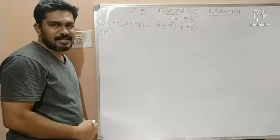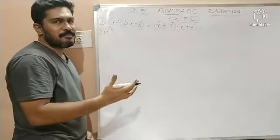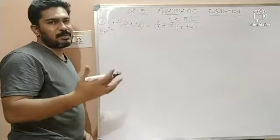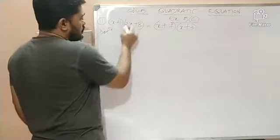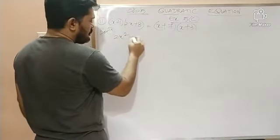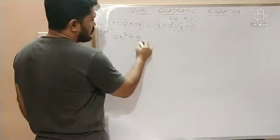Let us simplify the left hand side. Children, how do we expand when it is given in the (a+b)(c+d) format? The same way. So children, x into 2x is what? 2x² plus x into 8 is what?